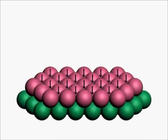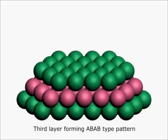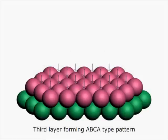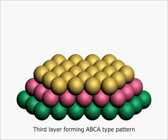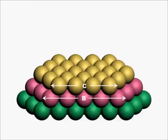In either case, the spheres of a particular layer are always kept directly over the depressions created by the triangular voids of a particular layer. Therefore, the void space between two adjacent layers is always the same, whether it be the void space between layers A and B, or the void space between layers B and C.